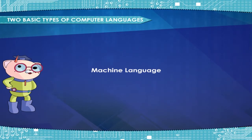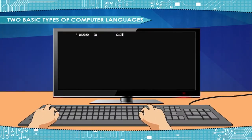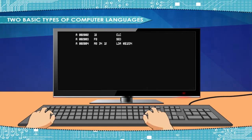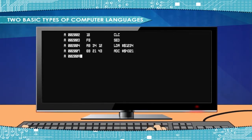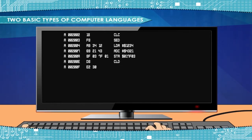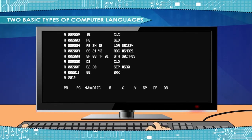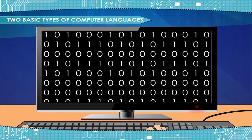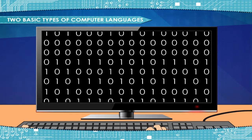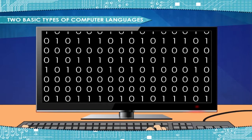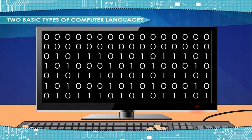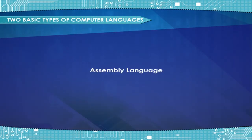Machine language is a language that is directly understood by the hardware. It is the lowest and most elementary level of programming language. It was the first type of programming language to be developed. It uses binary digits 0 and 1 for giving instructions.